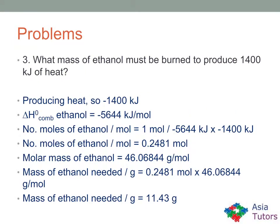Problem three: what mass of ethanol must be burned to produce 1,400 kilojoules of heat? Since we're producing heat, we write it as minus 1,400 kilojoules. From the table, the enthalpy of combustion of ethanol is minus 5,644 kilojoules per mole. Using this as a conversion factor and multiplying by minus 1,400 kilojoules gives 0.2481 moles of ethanol, which multiplied by the molar mass gives a final answer of 11.43 grams.